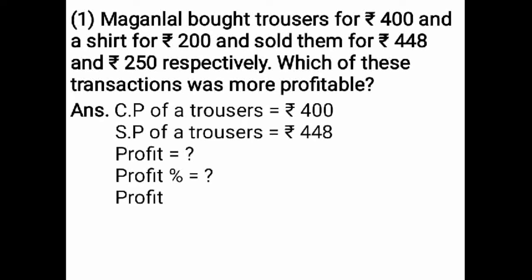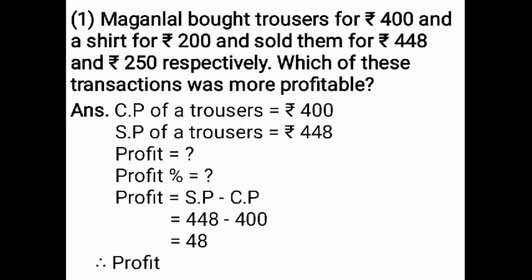The formula for profit is selling price minus cost price. Selling price is Rs. 448 minus cost price Rs. 400. Subtracting from the units place: 8 minus 0 is 8, 4 minus 0 is 4, 4 minus 4 is 0. The answer is Rs. 48. Therefore, profit is equal to Rs. 48.